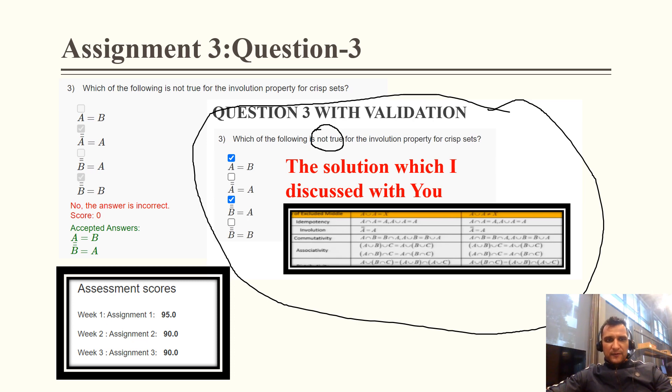Therefore, double complement of A and double complement of B - these both properties exist. But the question asks which is not true. Therefore, these are the correct options.